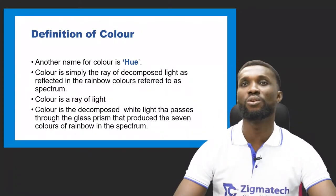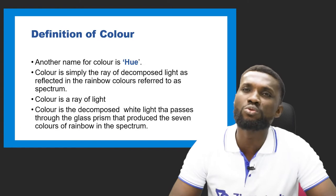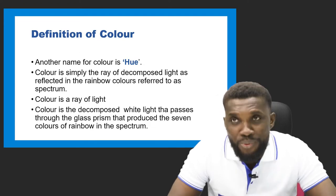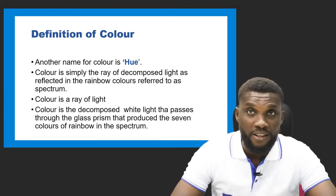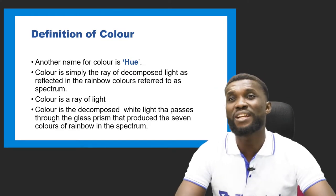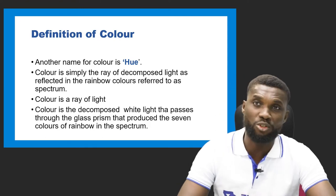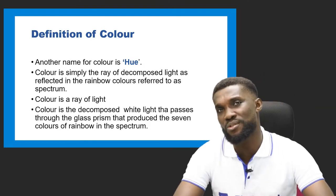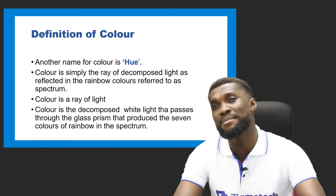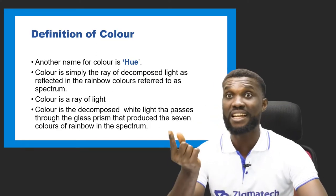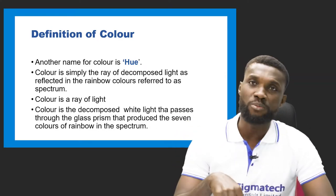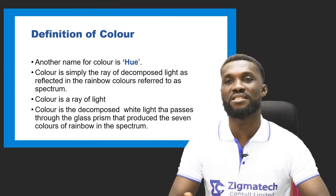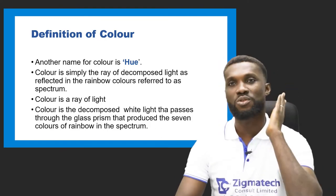Definition of color. Before we define color, I want you to know that color has two names — another name for color is known as hue. What is color? Color is simply the decomposed white light as reflected in the rainbow colors referred to as the spectrum. The seven colors you see in the rainbow are exactly what explains color. Color is also a ray of light — that's the simplest definition.